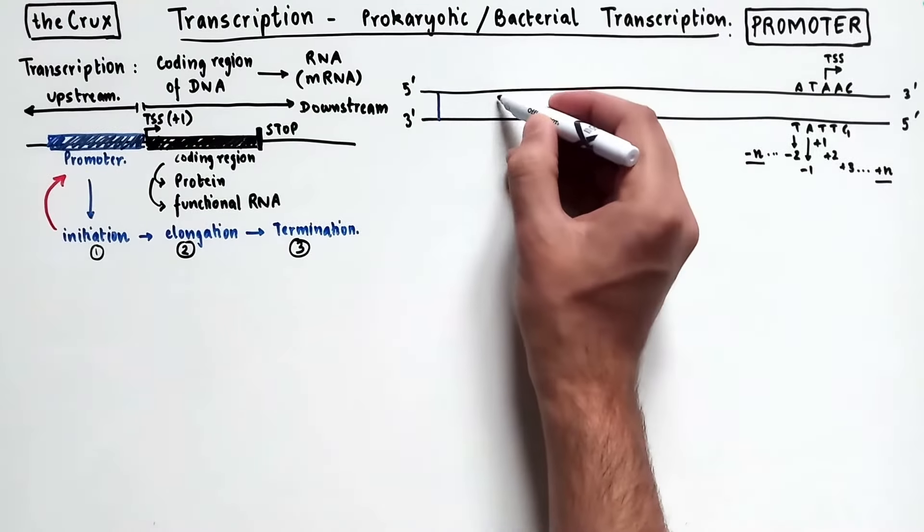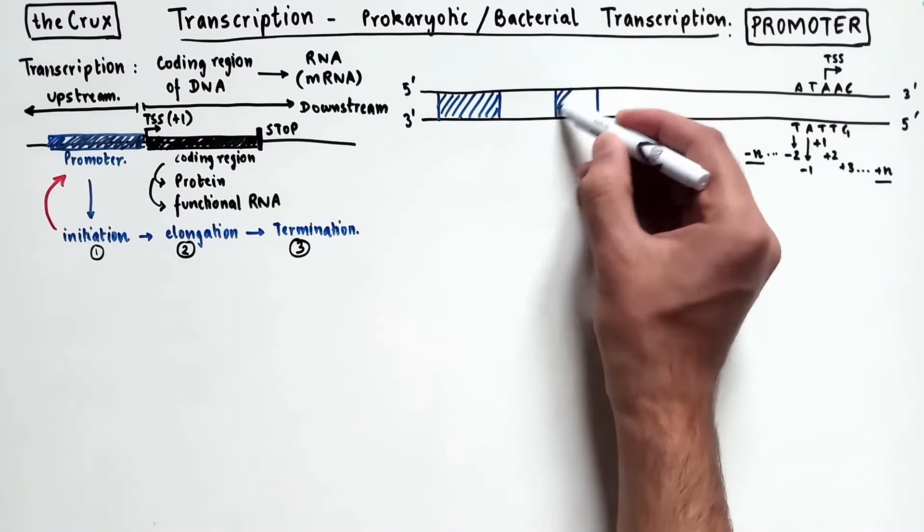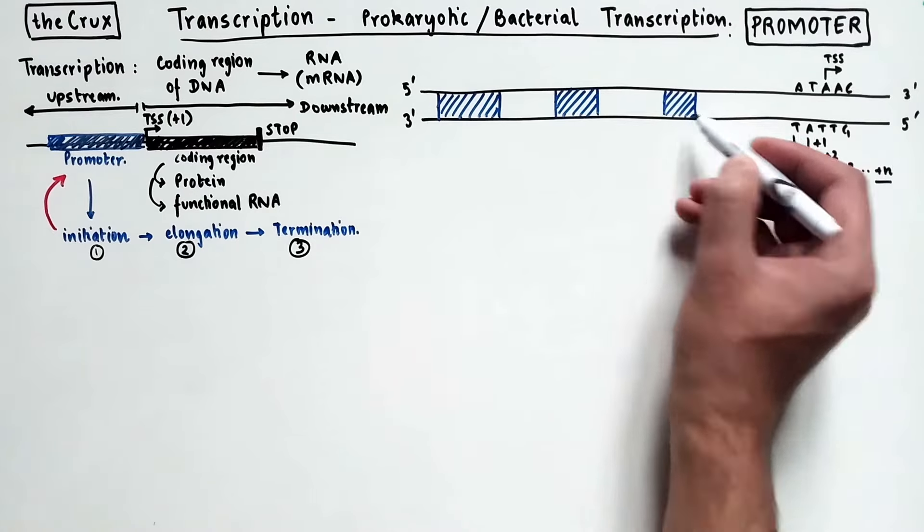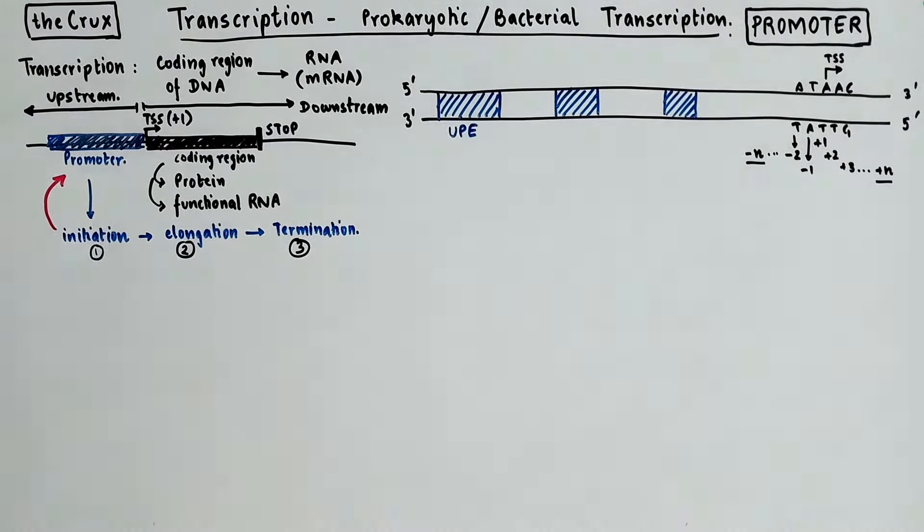Now, in our promoter region, which is the upstream of the TSS, we have three main promoter elements. The distal, or the farthest, is the UPE element, upstream promoter element, which is at about negative 58 to negative 37 position.